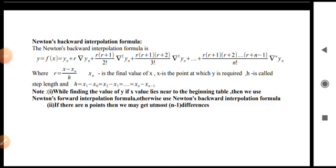Another method is Newton's backward interpolation formula, given by: y equal to f of x equals yn plus r times del yn plus r(r+1) divided by 2 factorial times del squared yn, plus r(r+1)(r+2) divided by 3 factorial times del cubed yn, and so on. The nth term is r(r+1)(r+2)...(r+n-1) divided by n factorial times del to the power n yn. Here r is given by (x minus xn) divided by h, where xn is the last value of x and h is the step size.